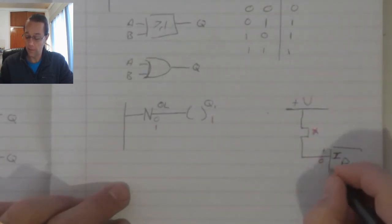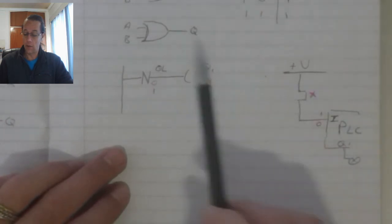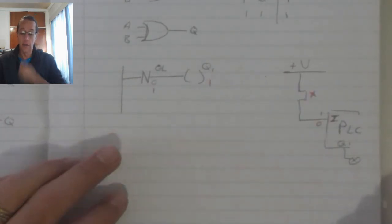So, if that output over there, Q1, connected to, let's say, a light bulb, then that light bulb will turn ON to indicate that there's a fault on the overload.